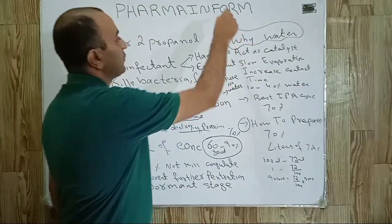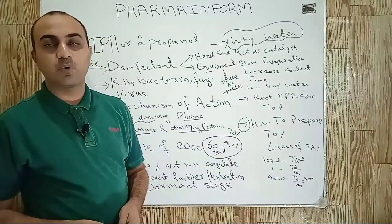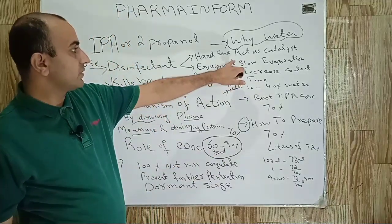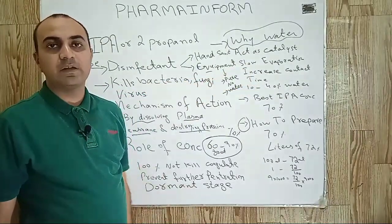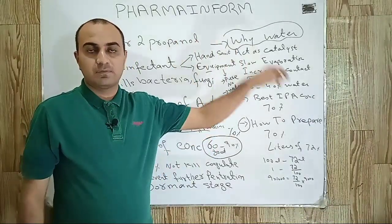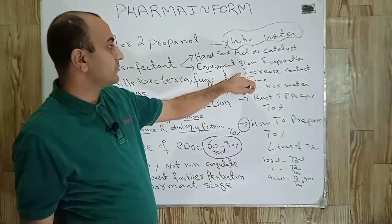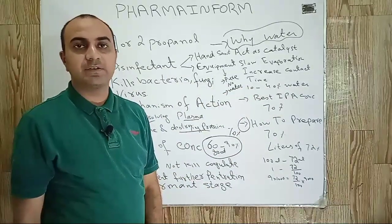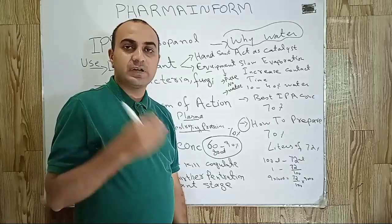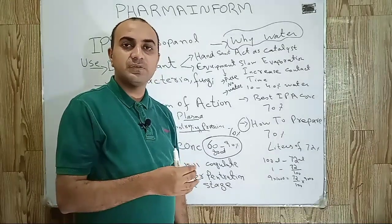Now the main point: why do we use water along with IPA, and what is the role of water? Water acts as a catalyst. As we know, isopropyl alcohol is evaporative. Water slows the evaporation of IPA and increases the contact time of isopropyl alcohol with microbes. When contact time is increased, the performance in killing microbes is also increased.